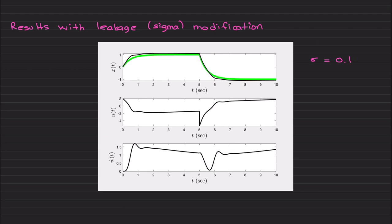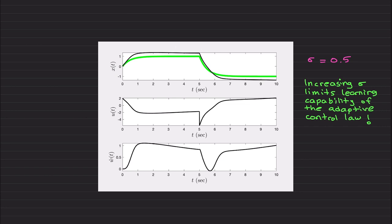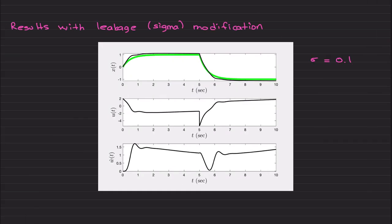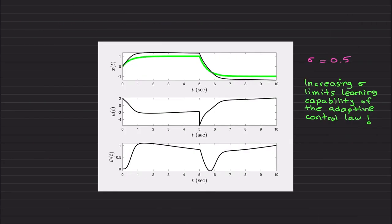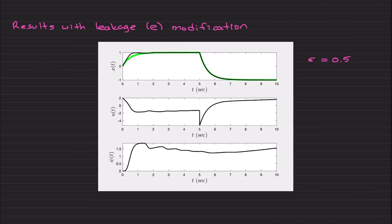You need to think about performance as well: you'd like to guarantee closed-loop system boundedness, but you shouldn't choose sigma too large. You care not only about stability or boundedness but also performance, so sigma should be small. That's why I demonstrated sigma=0.1 versus 0.5 — don't increase it too much.